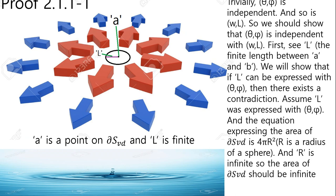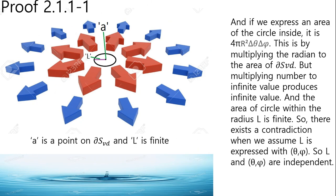Now we will show the four coordinates are independent. Trivially, theta phi are independent, and so is omega L. So we should show that theta phi is independent of omega L. First, say L is the planar length between A and B. We will show that if L can be expressed with theta phi, then there exists a contradiction. The equation expressing the area of DS3D is 4 pi R squared, and R is infinite, so the area of DS3D should be infinite. If we express the area of a circle inside, it is 4 pi R squared delta theta delta phi. But multiplying a number by an infinite value produces an infinite value, and the area of the circle within radius L is finite. So there exists a contradiction when we assume L is expressed with theta phi, so L and theta phi are independent.